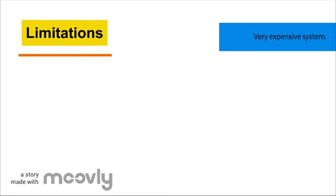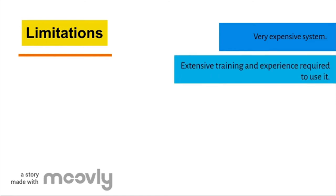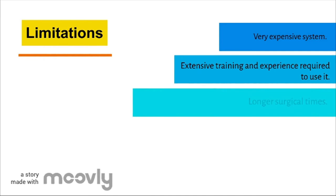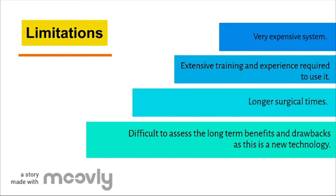Just like every other procedure, Mako-assisted TKA has its disadvantages. Firstly, this system is not accessible to everyone as it is extremely expensive to buy and operate. Secondly, performing Mako-assisted TKA requires extensive training and experience, and some surgeons may feel more comfortable with conventional joint replacement surgery. Further, surgical times for Mako-assisted TKA are slightly longer than conventional surgeries, which may increase the risk of infection. A final disadvantage is that Mako-assisted TKA is a relatively new procedure with only early evidence of its efficacy, making it difficult to evaluate long-term implant performance compared to the proven efficacy of prostheses used in traditional joint replacement.